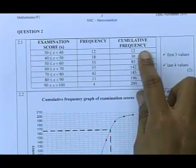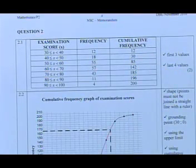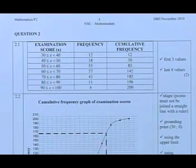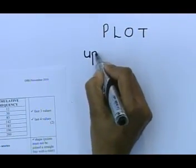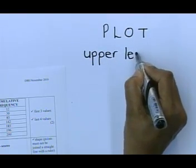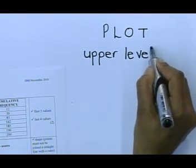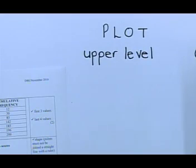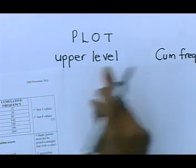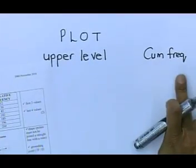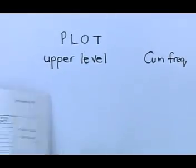Everybody, if I can give you a good tip, is to go and say, what must I plot? So what must I plot? I must plot my upper level, and I must plot it next to my cumulative frequency. What must I plot? It's my upper level next to my cumulative frequency. Now, the upper level means, just look here, everybody, that upper level is the 40 and the 12,